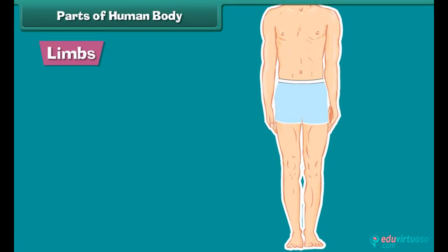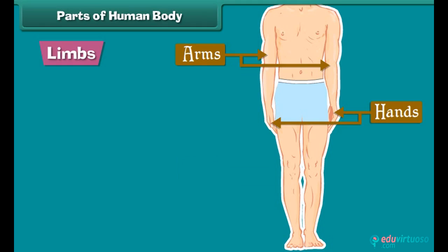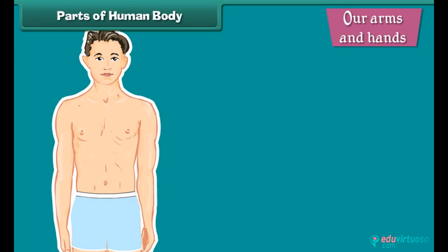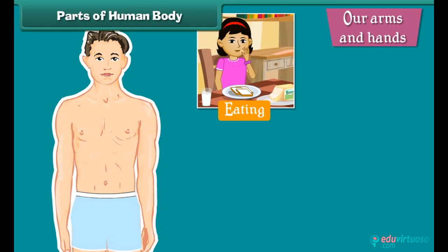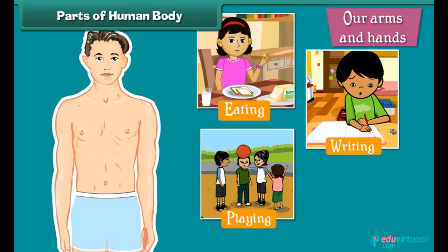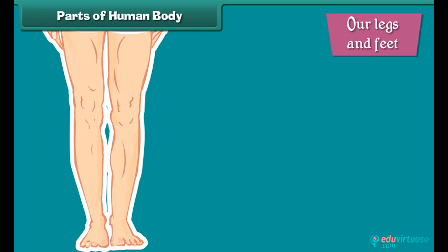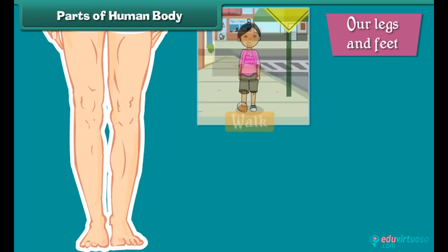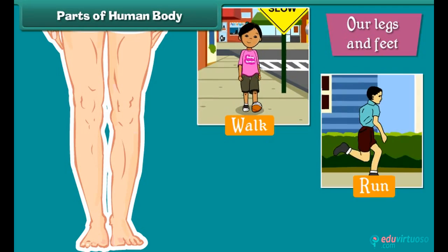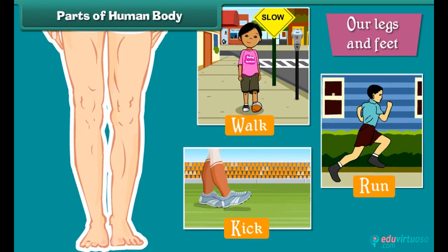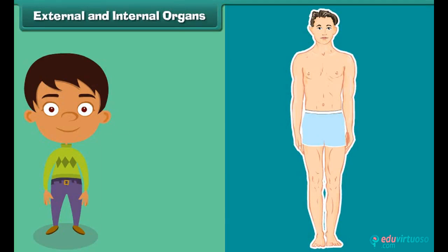Limbs consist of a pair of arms, hands, legs, and feet. Our arms and hands assist us in eating, writing, playing, holding, and lifting things. Our legs and feet help us to walk, run, kick, and dance.